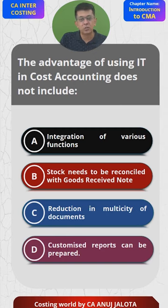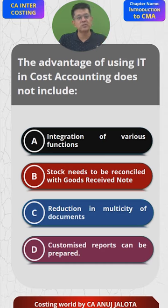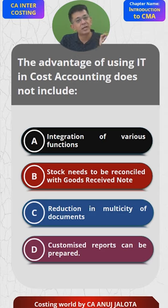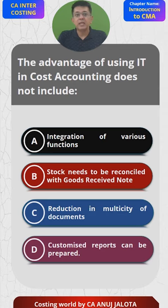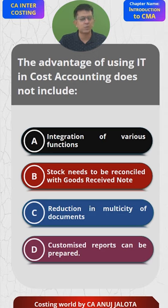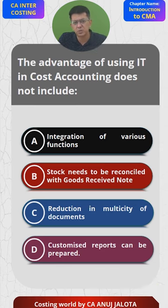Another example: we have a database of all students from CA Foundation to CA Inter to CA Final. If somebody wants a list of CA Foundation students in Mumbai, we don't generate that data manually or fill out forms again - through information technology it's all possible. Option D: customized reports can be prepared - obviously that's a basic advantage. Filtration is possible; for example, finding revenue generated in the last three months is possible. So A, C, and D are all advantages.